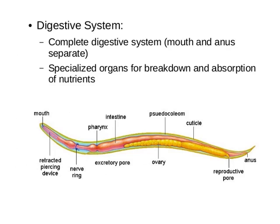In the digestive system diagram, there is a complete digestive system having mouth and anus, with specialized organs for breakdown and absorption of nutrients. The mouth and retractable feeding device leads to the pharynx, then the brain, then the intestine, which leads to the anus. Other structures present include excretory pores, pseudocoelom, ovary, cuticle, and reproductive pores.